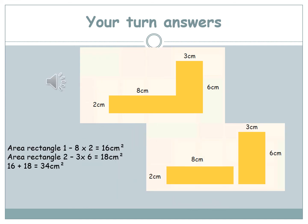Let's go through the answers now. The area of rectangle one is eight times two, so that equals 16. Then the area of rectangle two is three times six. That area is 18 centimeters. So now we need to add 16 add 18 together, which equals 34 centimeters. Make sure you've got the square at the end. So 34 centimeters squared. Well done if you've got that correct.